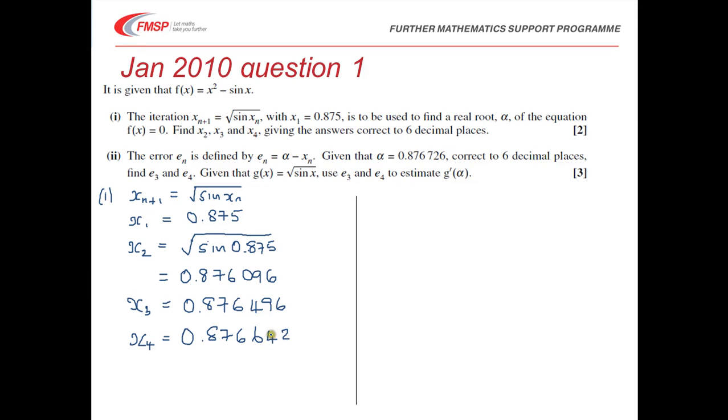The way the marks are allocated is that you get a B mark for any one correct using radians, and then another mark for getting them all correct. So B1 for one of them correct, and then another for getting them all correct.